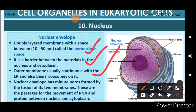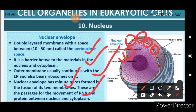The nuclear envelope has minute pores formed by the fusion of its two membranes. These are the passages for the movement of RNA and protein between the nucleus and the cytoplasm. In the diagram, the orange channel-like structures are these pores, acting as channels for movement of material from inside the nuclear matrix into the cytoplasmic matrix.